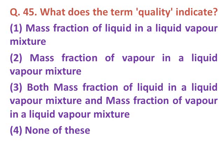Question forty-five: What does the term 'quality' indicate? Option one: mass fraction of liquid in a liquid-vapour mixture. Option two: mass fraction of vapour in a liquid-vapour mixture. Option three: both. Option four: none of these. The correct answer is option two — quality indicates the mass fraction of vapour in a liquid-vapour mixture.